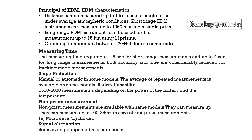Measuring time is 1.5 seconds in short range and 4 seconds for long range. Both accuracy and time need to be considered. Slope reduction can be manual or automatic in some models. Battery capacity allows 1500 to 5000 measurements. For non-prism measurement, range is 100 to 350 meters. Microwave and infrared versions are available. Signal alternation uses average and repeated measurements.